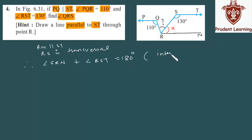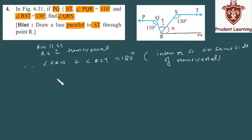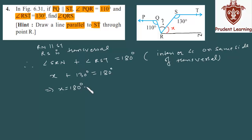They are co-interior angles on the same side of the transversal. So angle SRN plus 130 degrees equals 180 degrees, which gives X as 180 minus 130, which gives X as 50 degrees.